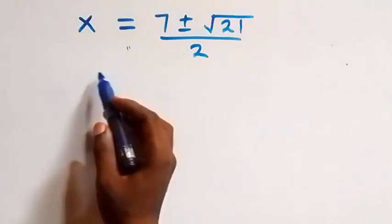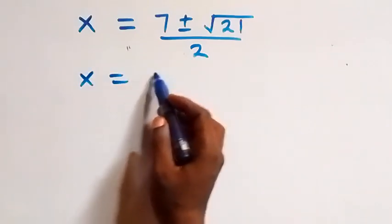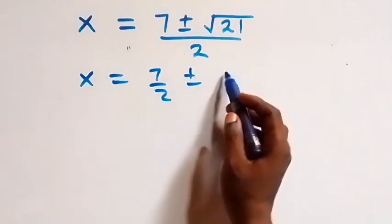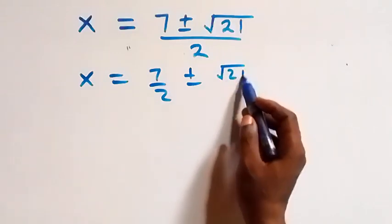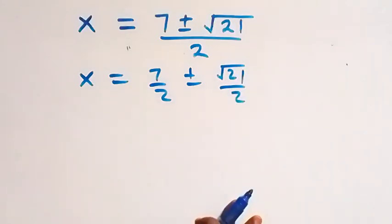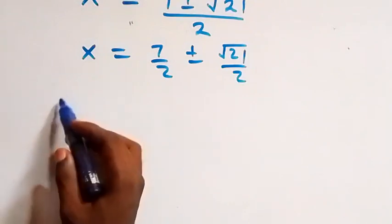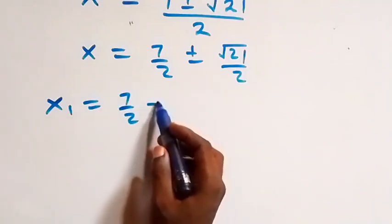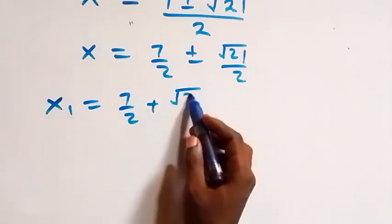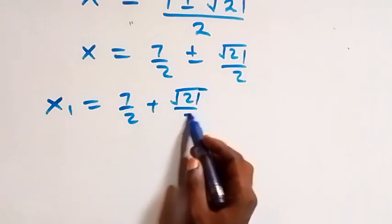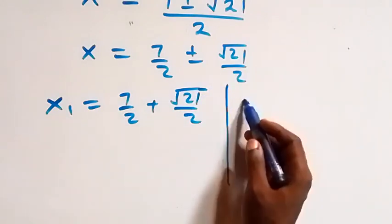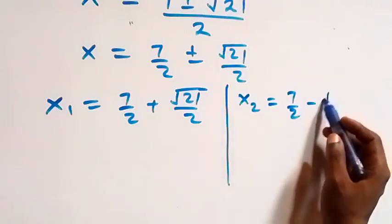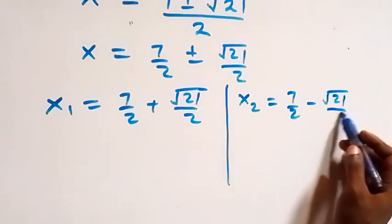We can write this as x equals seven over two plus or minus root 21 over two. That gives two values: x₁ equals seven over two plus root 21 over two, and x₂ equals seven over two minus root 21 over two.